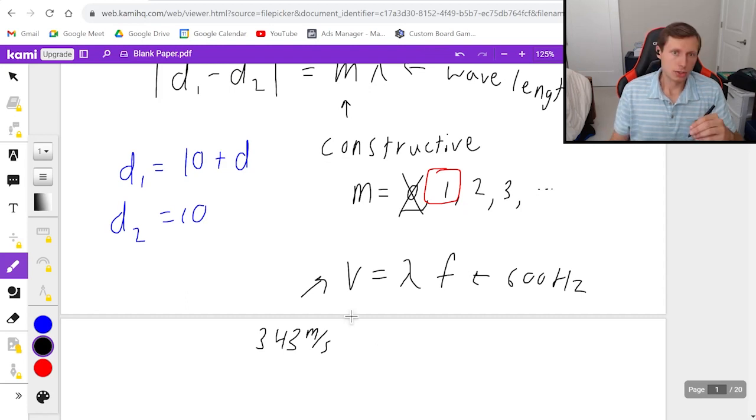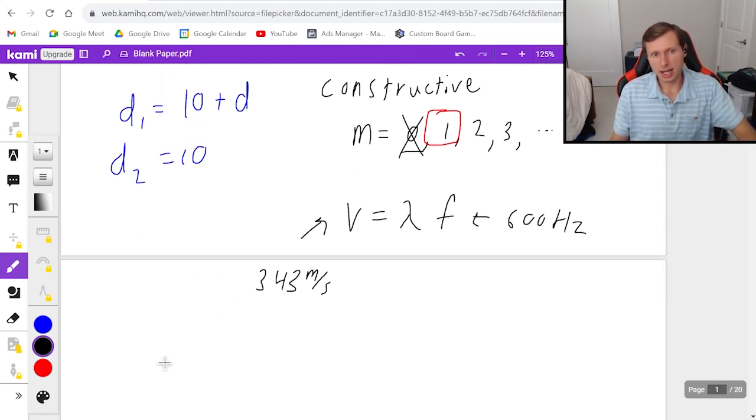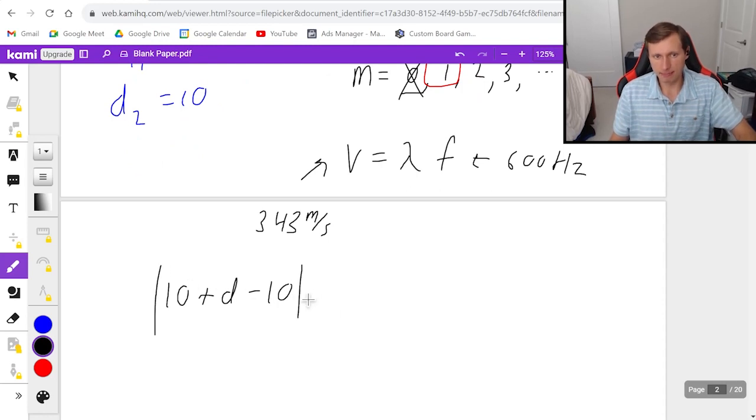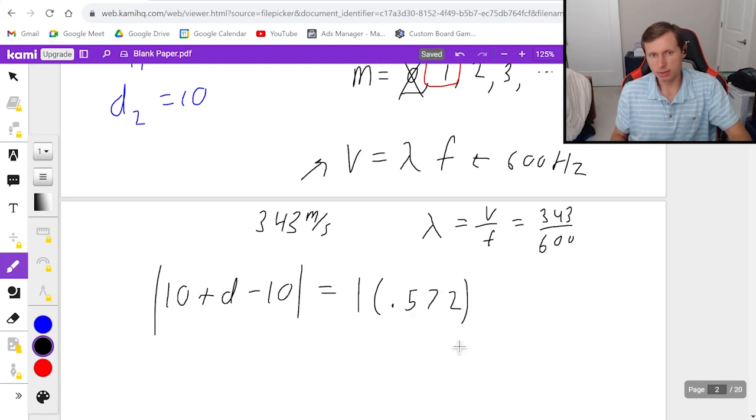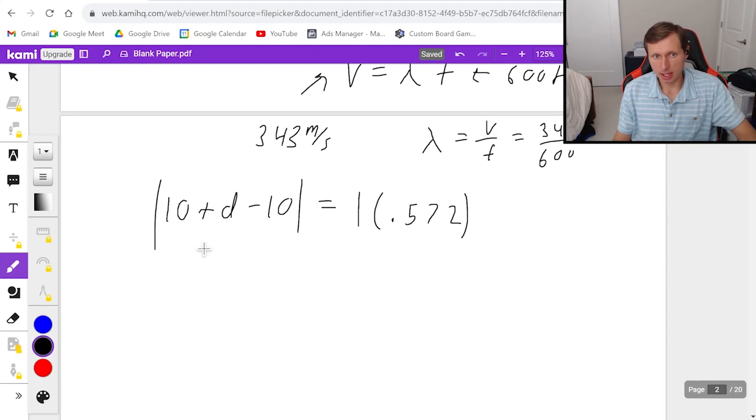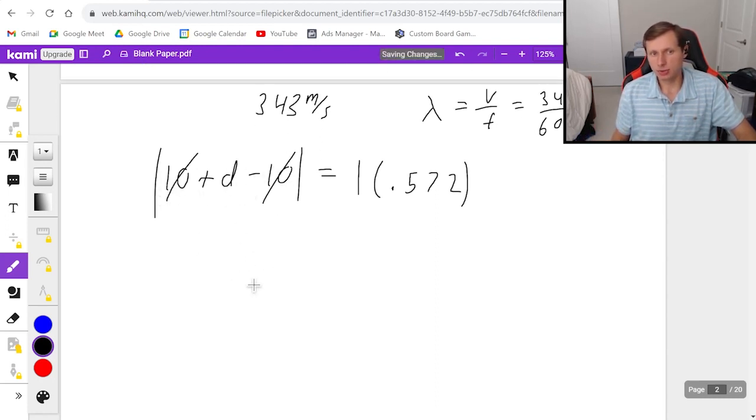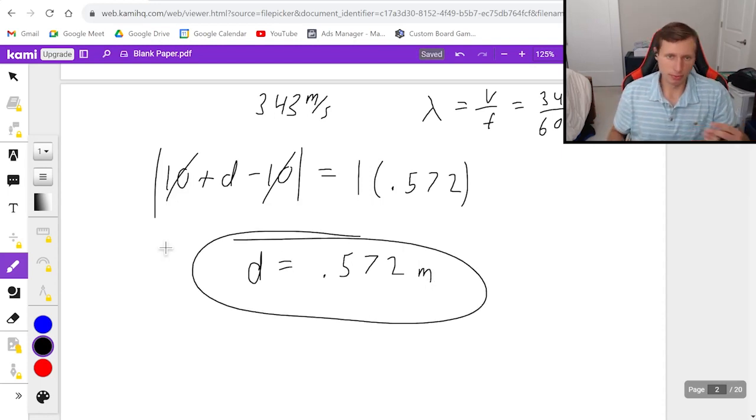So then finally, I can plug all these variables into the equation. And I can say d1 minus d2, in other words, 10 plus d minus 10, absolute value of that, which is equal to m, which we're going to use one, times lambda. And lambda is just going to be v over f. In other words, 343 divided by 600. I plug that in a calculator, and I get 0.572 meters. And now I just got to solve for d. Luckily, the 10 and the minus 10 cancel. And the absolute value doesn't really matter right now, because it's positive anyway. And 1 times 0.572 is just itself. It looks like this is the distance between the speakers, 0.572 meters. If you prefer centimeters, 57.2 centimeters. And there we go.